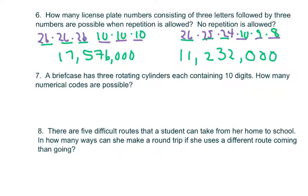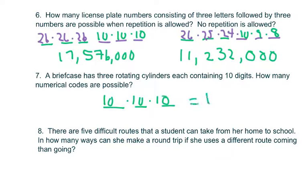A briefcase has three rotating cylinders, each containing ten digits. How many numerical codes are possible? That's 10 × 10 × 10 = 1,000. Three zeros there.